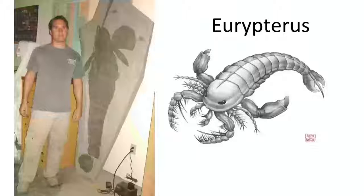An interesting example is the eurypterus — an extinct organism whose artist's conception is on the right and a fossil specimen is on the left, next to a person for scale. We know that in what is now New York State, hundreds of millions of years ago, this organism existed in shallow seas. It has since been named the New York State fossil. The eurypterus is found in sedimentary rocks, which are the only type of rocks that truly contain fossils.